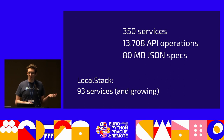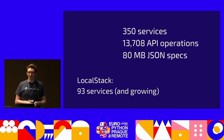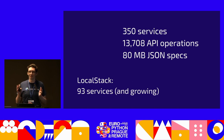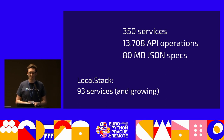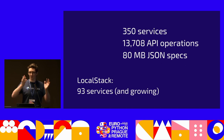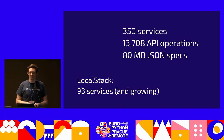In total, AWS currently has about 350 service specs, with almost 14,000 API operations, amounting to 80 megabytes of JSON specs — which is actually a big bulk of our container image. In LocalStack, we currently have 93 services implemented and growing. You can see there's just a lot of code to maintain.